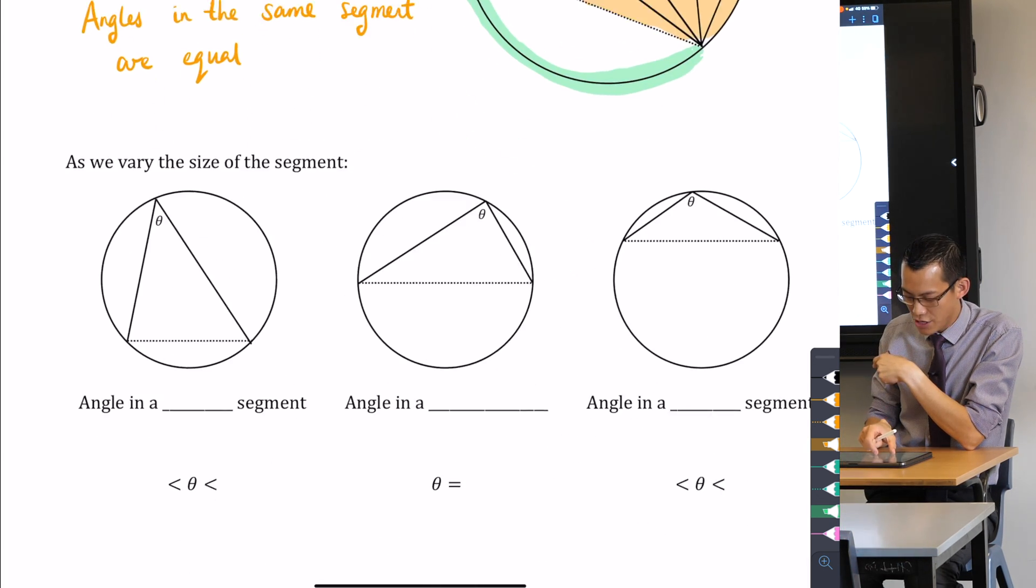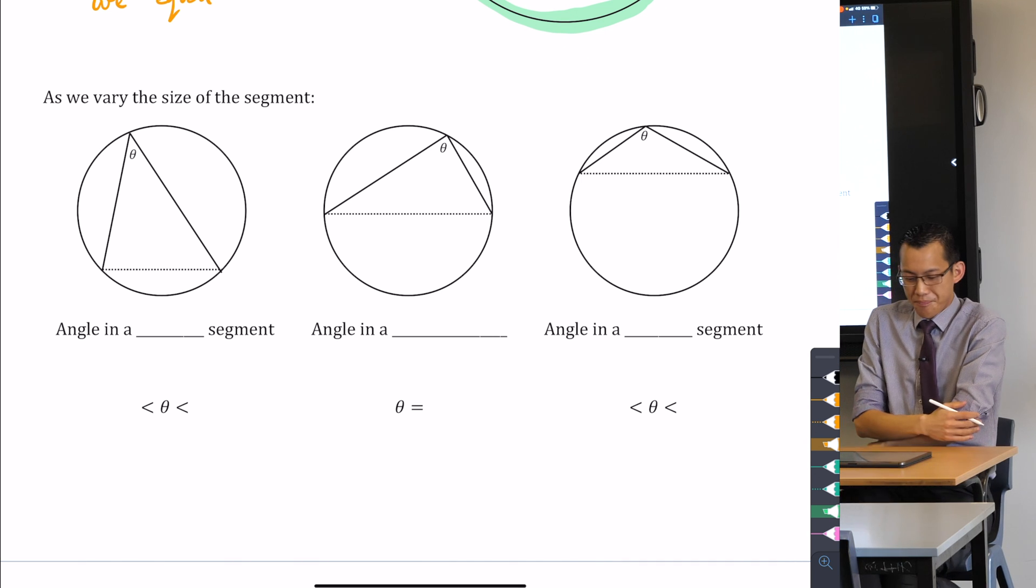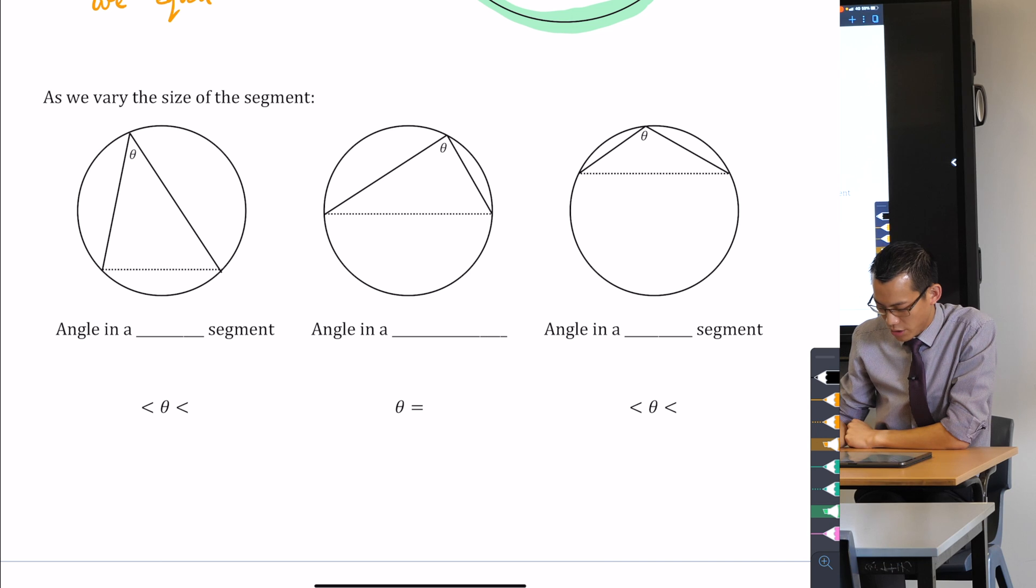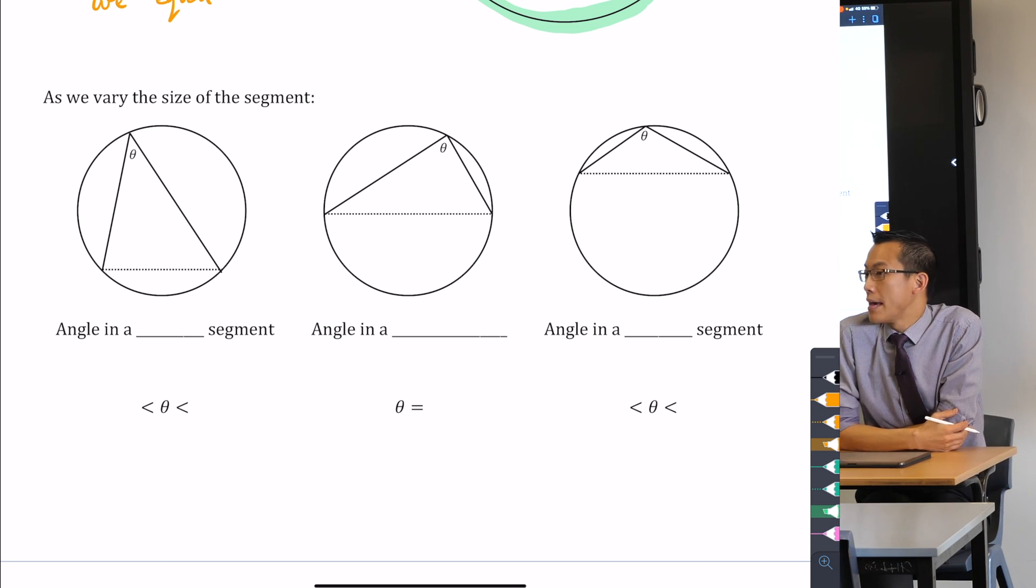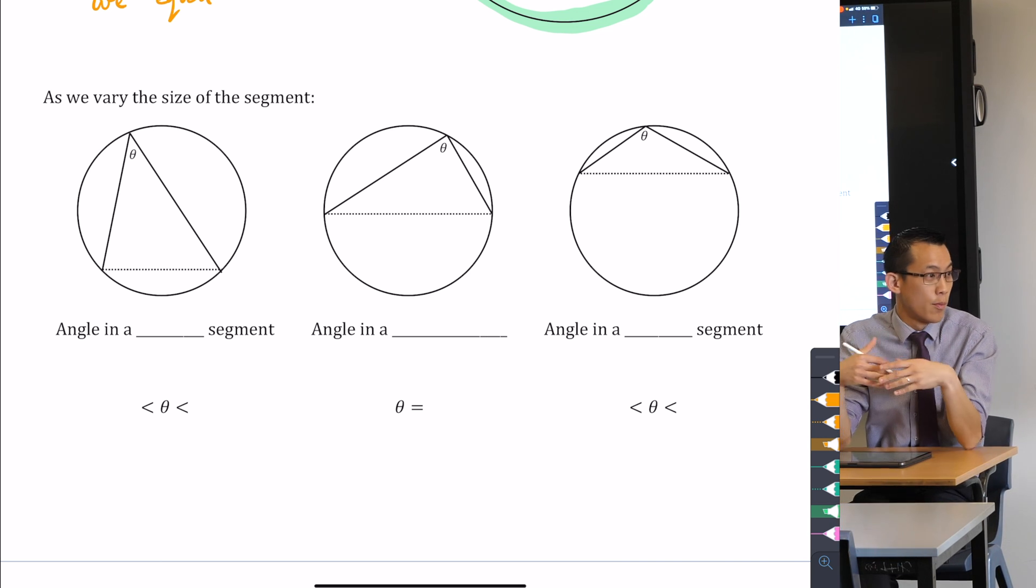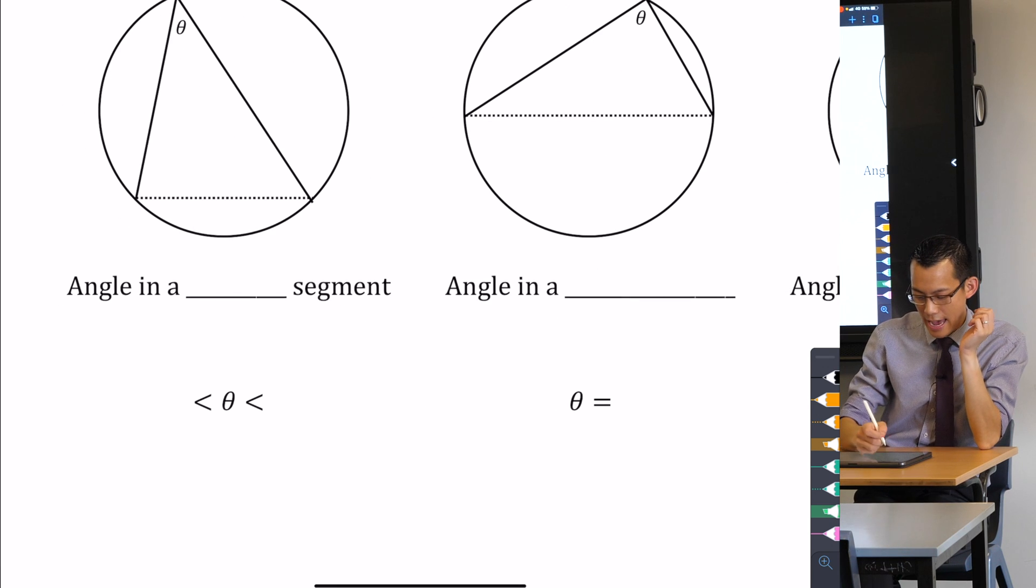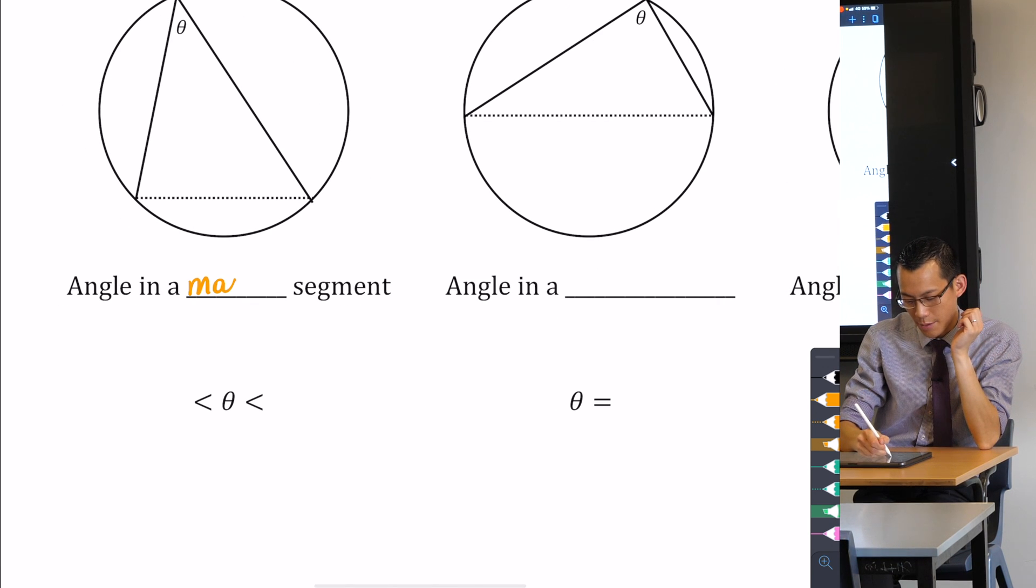And whether it's bigger or smaller depends on the angle that we get. And so that's why on the bottom of the page here, I want you to have a look. These segments, they change name based on whether they are bigger or smaller than a semicircle. So if you have a really large segment up the top, we call that a major segment.